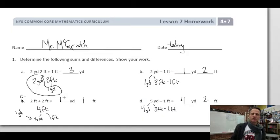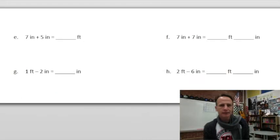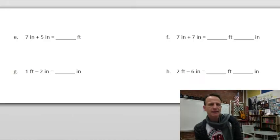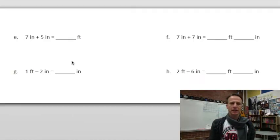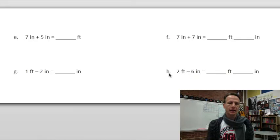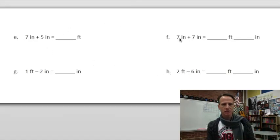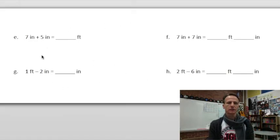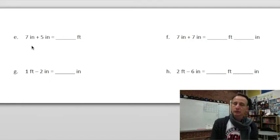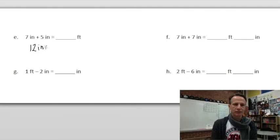A little more on number one — it might get trickier. Parts E through H now deal with inches and feet: addition, addition, subtraction, subtraction. Let's jump right in. Seven inches plus five inches — seven and five make 12, and we know that 12 inches equals one foot. So our answer is one foot.